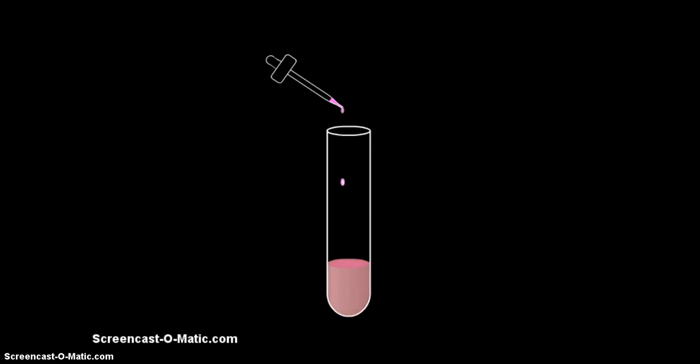Continue adding potassium permanganate till the purple color of potassium permanganate no longer disappears. This shows that the oxidation of alcohol to acid is complete. The ethyl alcohol solution is oxidized to ethyl alcohol solution in the presence of potassium permanganate.